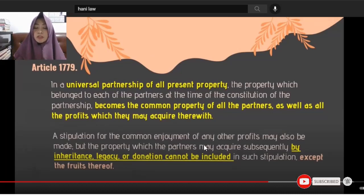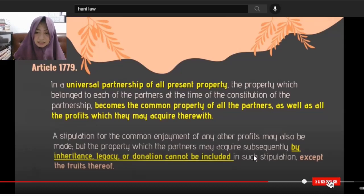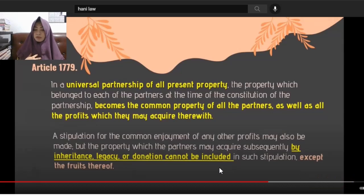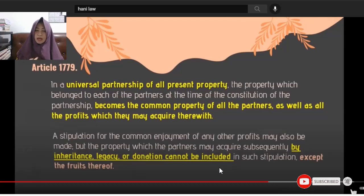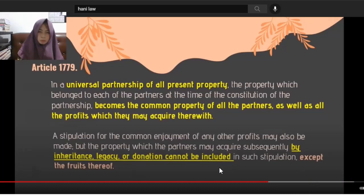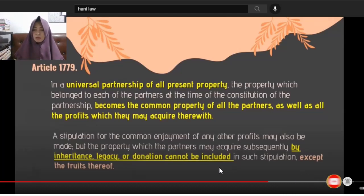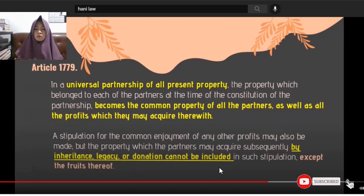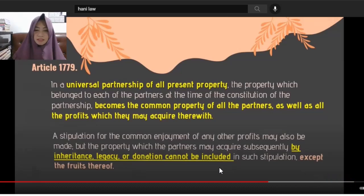A stipulation for the common enjoyment of any profits may also be made. But property which the partners may acquire subsequently — by inheritance, legacy, or donation — cannot be included. So for example, if in UPPP I already contributed my office, and later I receive an inheritance from my aunt, that inherited property cannot be added to the common fund. However, the fruits of that inherited property may go to the UPPP.